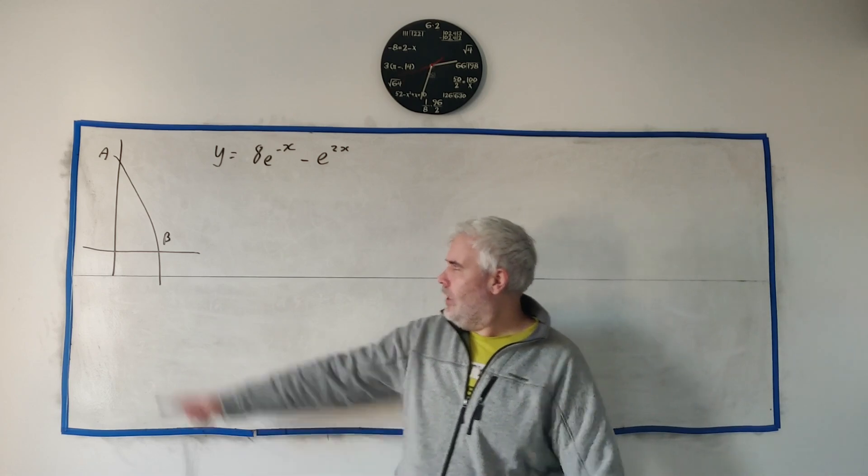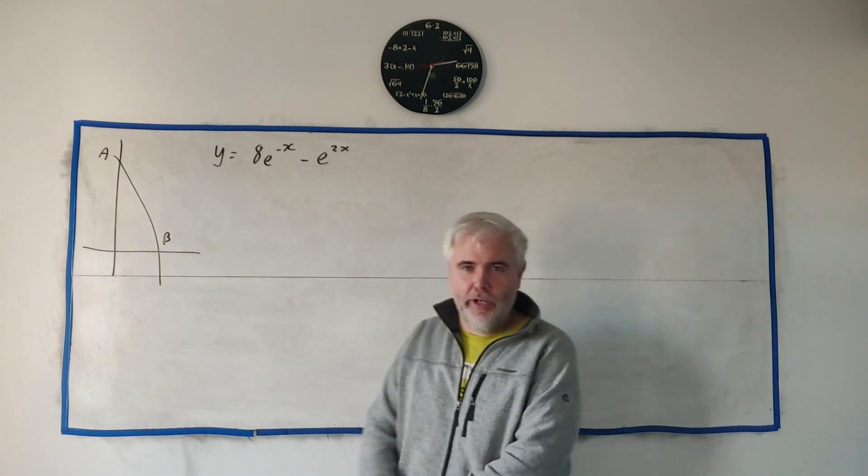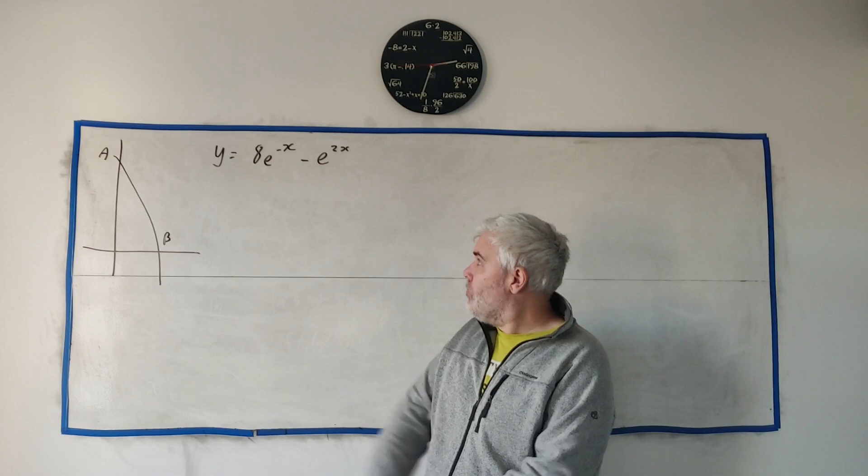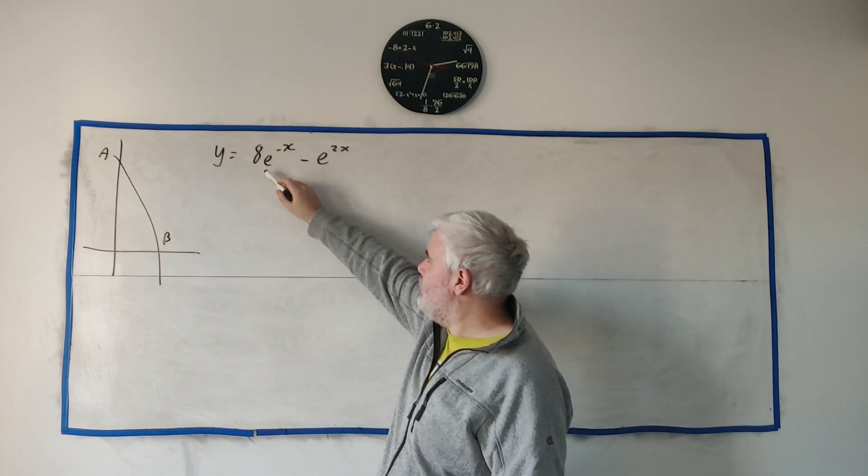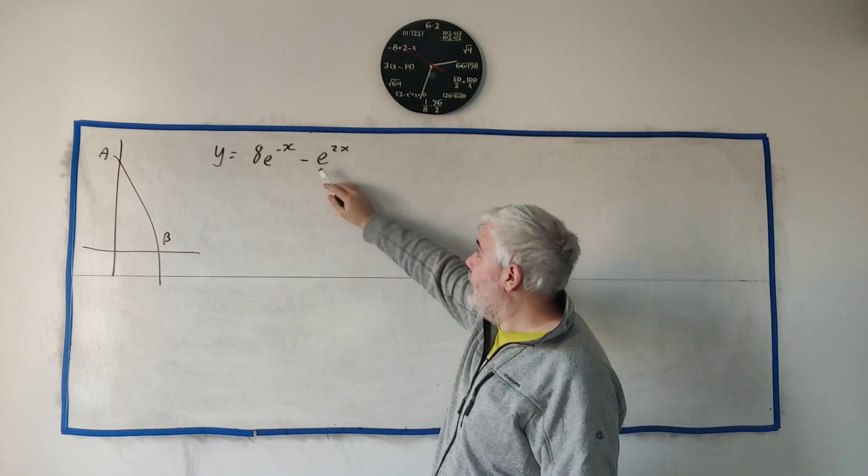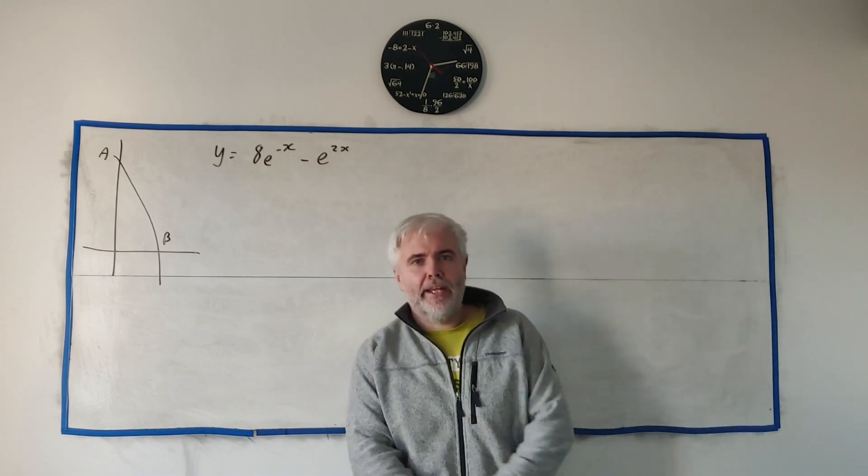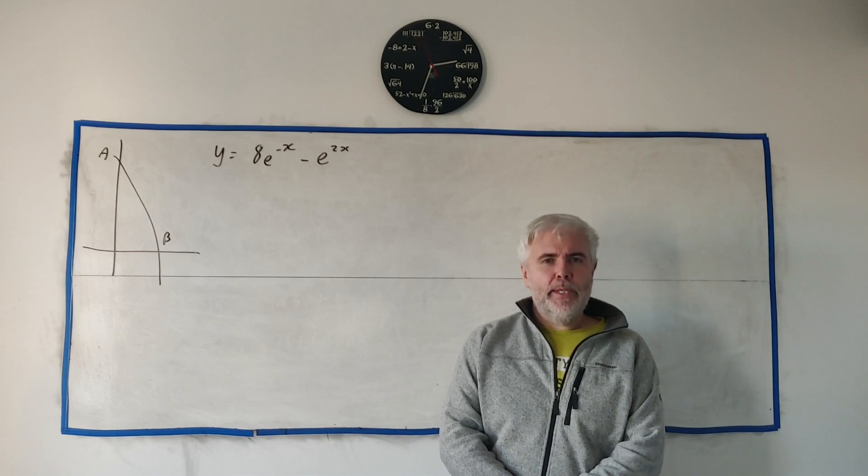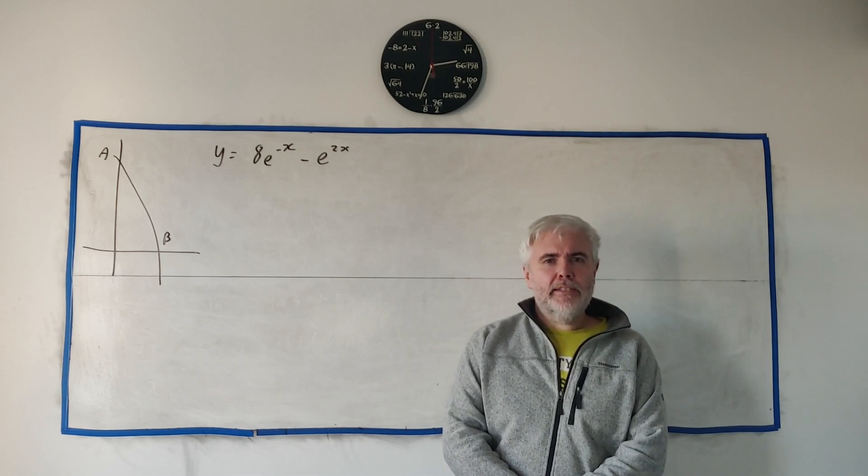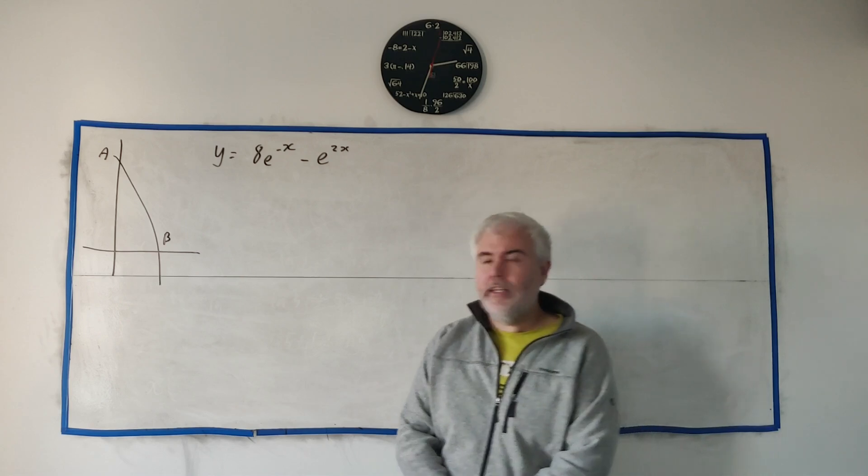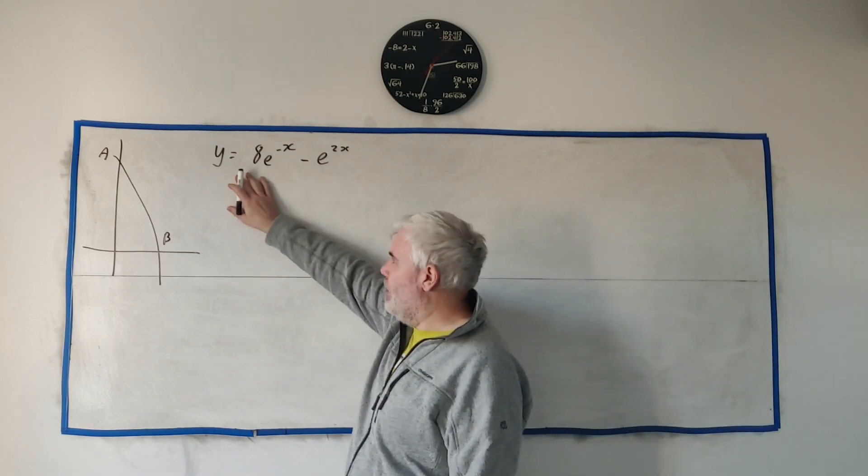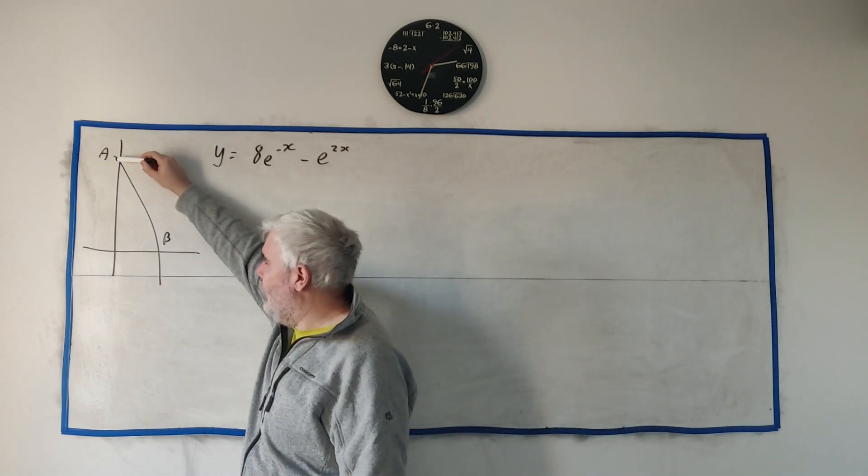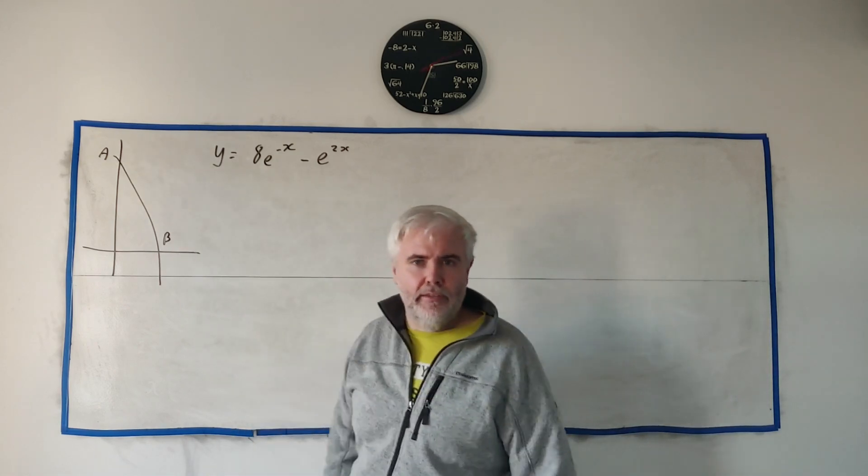In question three we're given a drawing roughly like this one and then we're also given the equation of this curve. Y is equal to 8 times e to the power of minus x minus e to the power of 2x and we're asked two questions part A and B. In part A they simply ask us to find the gradient of the curve at A. They tell us A is on the y-axis, B is on the x-axis.